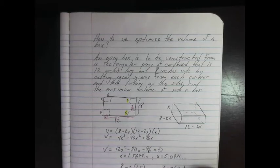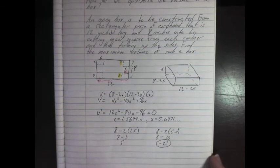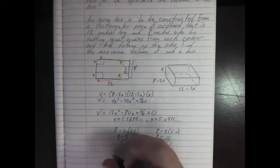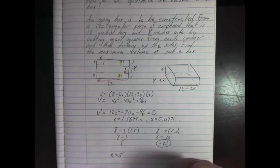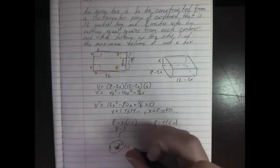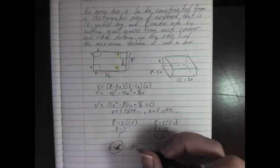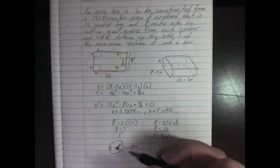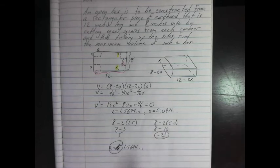I'm going to have 8 minus 10, that's negative 2. This can't possibly work. The reason it can't possibly work is that means that our box, which is a real world object and needs all positive values, would have a negative length. Can't possibly work there. So here, our answer would be x is equal to 1.5694. The maximum volume of such a box would happen when the square we cut out is 1.5694 inches. If we cut out the volume using squares, each one 1.5694 inches, we'll be able to have the maximum volume of the box.